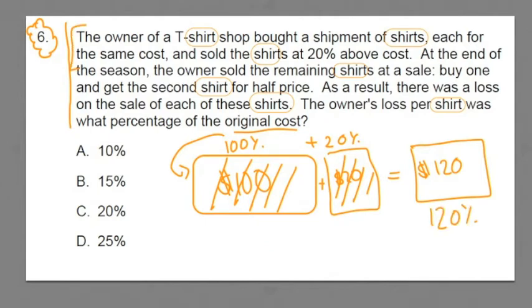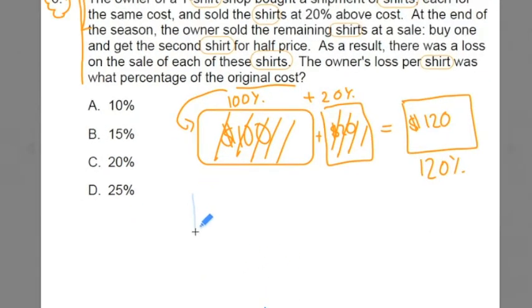That's this plus the extra 20% for a total of 120% of the original cost. Now, we're going to do part two. It says, at the end of the season, the owner sold the remaining shirts at a sale. Buy one, get the second for half price. So part two, the owner is selling two shirts.